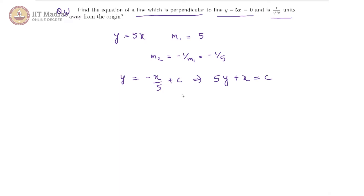This c is not the same as the previous c — I've used it as c because it is an arbitrary constant yet to be determined. Otherwise it should have been 5c. Anyway, now we have to find the value of c in this equation.